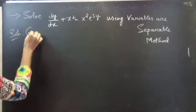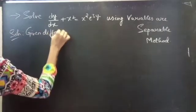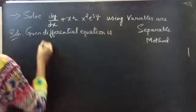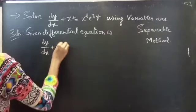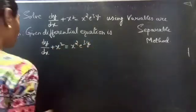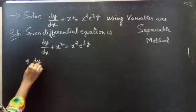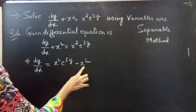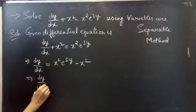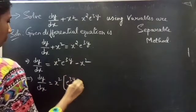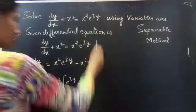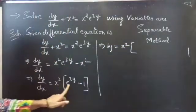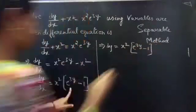The given differential equation is dy/dx plus x squared equals x squared times e to the power 3y. We can write this as dy/dx equals x squared times e to the power 3y minus x squared. Now take x squared common from these two terms, giving dy/dx equals x squared into (e to the power 3y minus 1). This can be written as dy equals x squared into (e to the power 3y minus 1) dx.